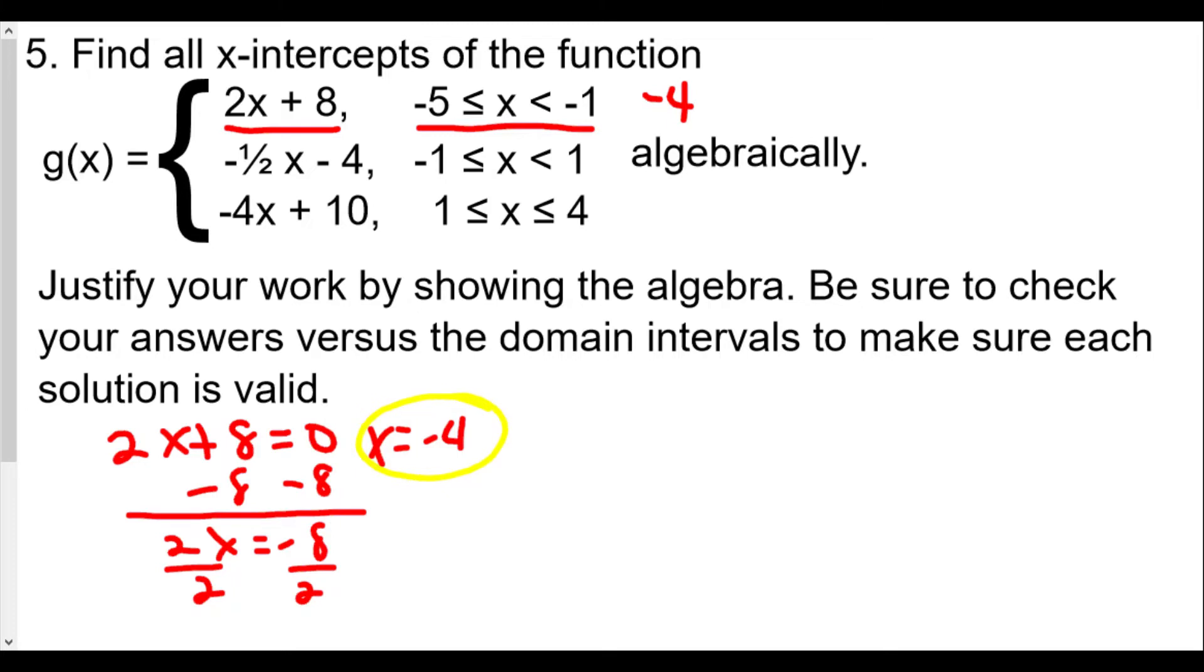Let's now take a look at the next function. We can set -½x - 4 equal to zero. We add 4 to both sides. We have -½x is equal to positive 4. We're going to multiply both sides by -2 over 1 to get 1x by itself, and we find x is equal to -8.